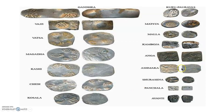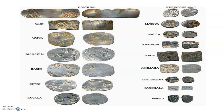Let us see the images of the coins of the sixteen Mahajanapadas: Ghandara, Vachi, Vatsa, Magada, Kashi, Chedi, Kosala, Kuru Pauravas, Matsya, Malla, Kamboja, Anga, Ashmaka, Shurasena, Panchala, and Avanti. Each Mahajanapada had different types of coins.